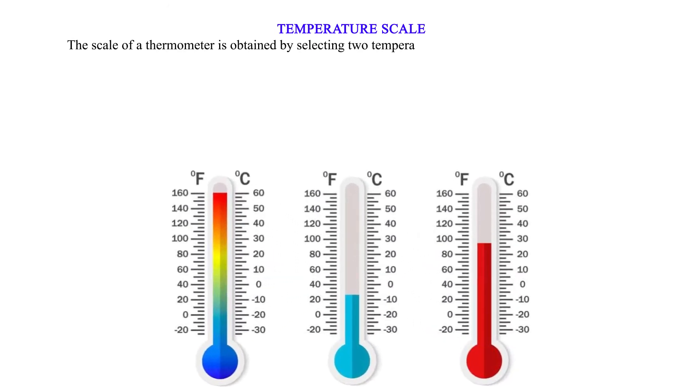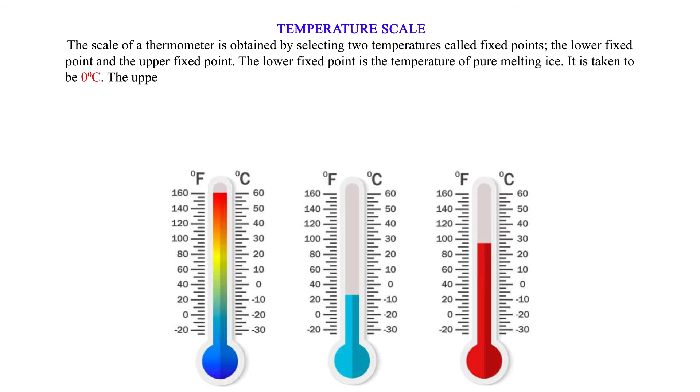Temperature scale. The scale of a thermometer is obtained by selecting two temperatures called fixed points: the lower fixed point and the upper fixed point. The lower fixed point is the temperature of pure melting ice, taken to be zero degrees Celsius. The upper fixed point is the temperature of steam above pure boiling water at normal atmospheric pressure, taken to be 100 degrees Celsius.